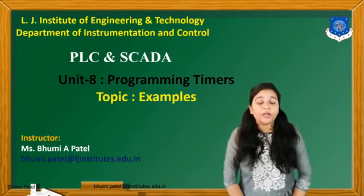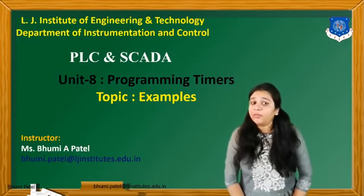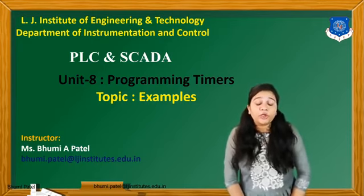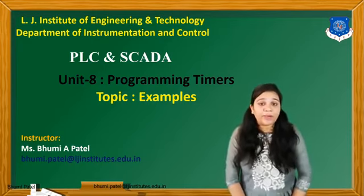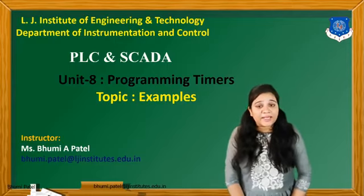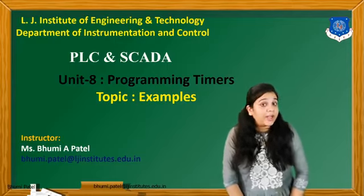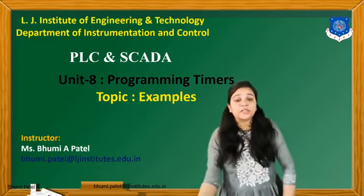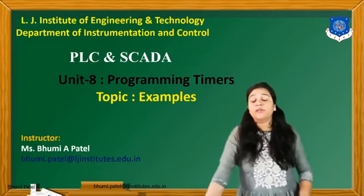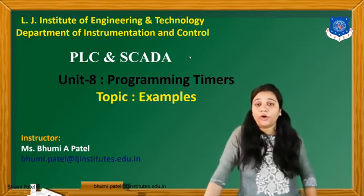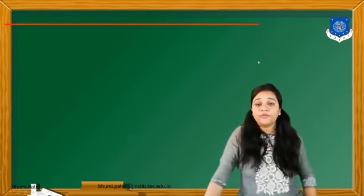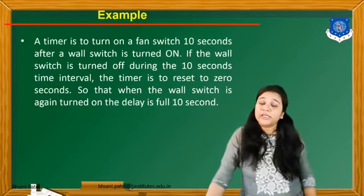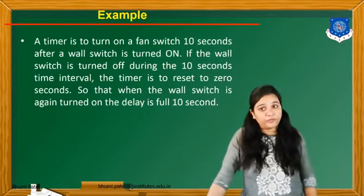What is the application of the T-on timer? The T-on timer will be used whenever we turn on a particular system or plant for a particular time — at that time we connect the T-on timer. And if in some application we need to turn off the system after some time, at that time we use the T-off timer. So first of all we will study different types of examples using the T-on and T-off timer.